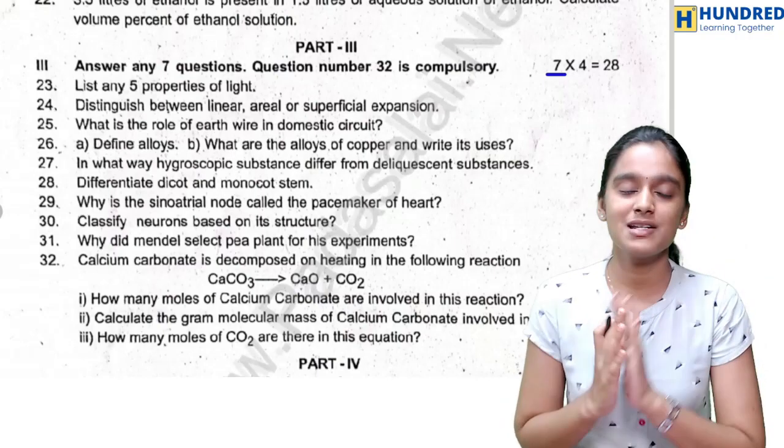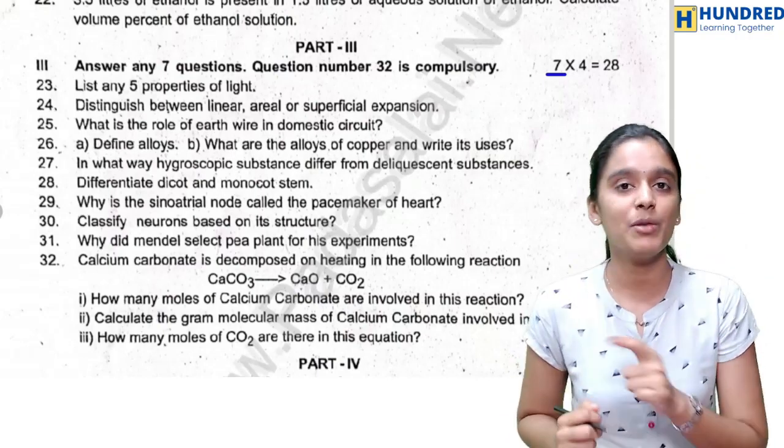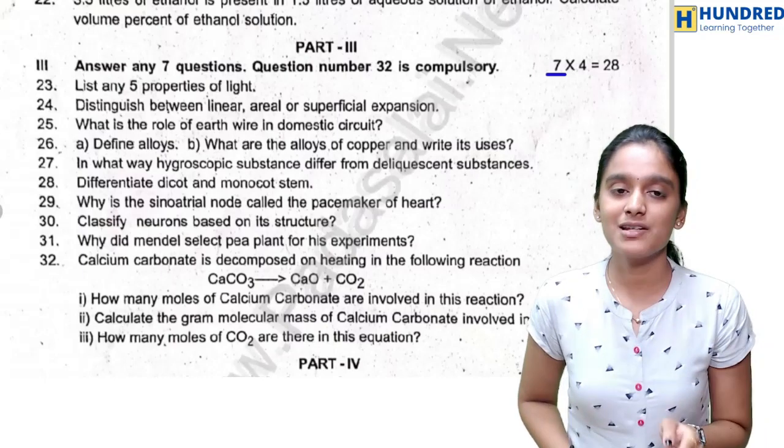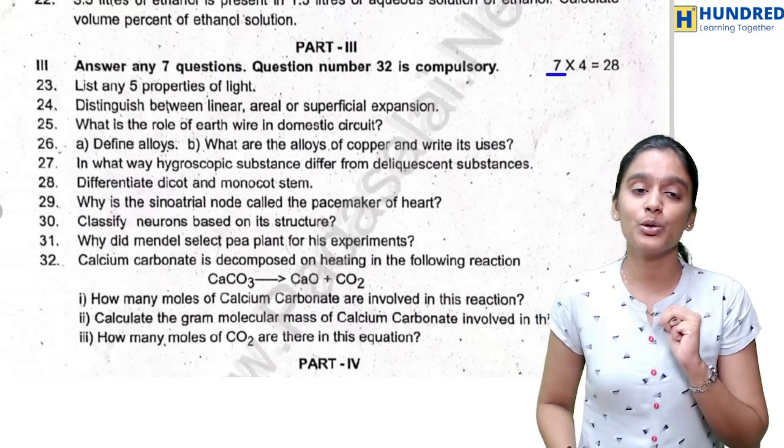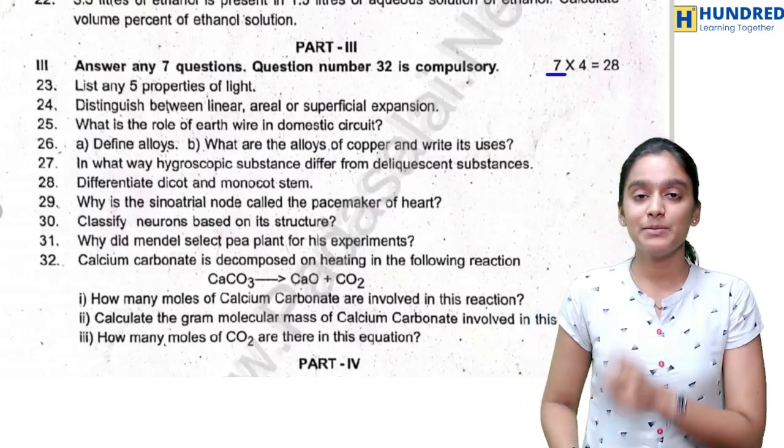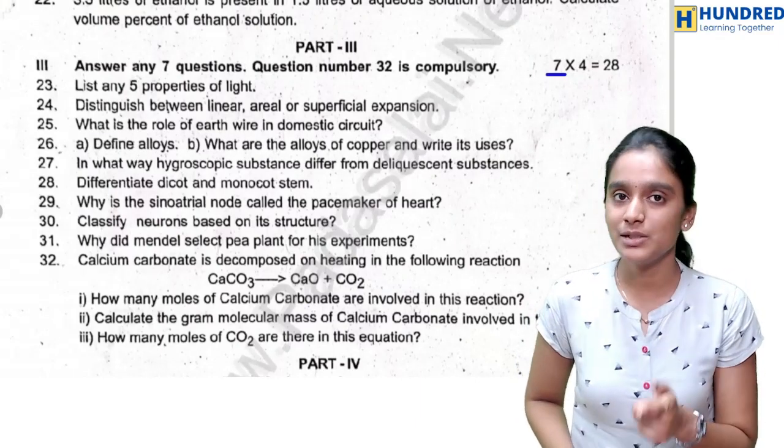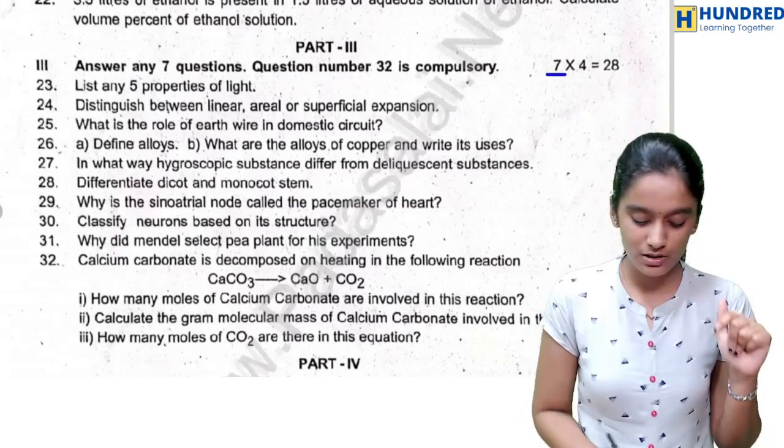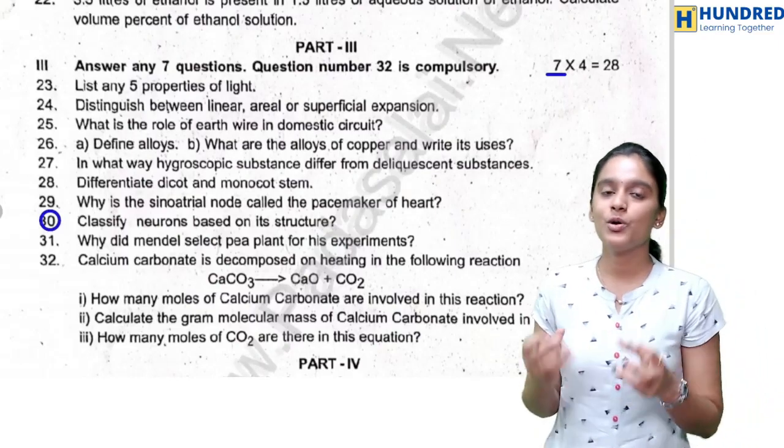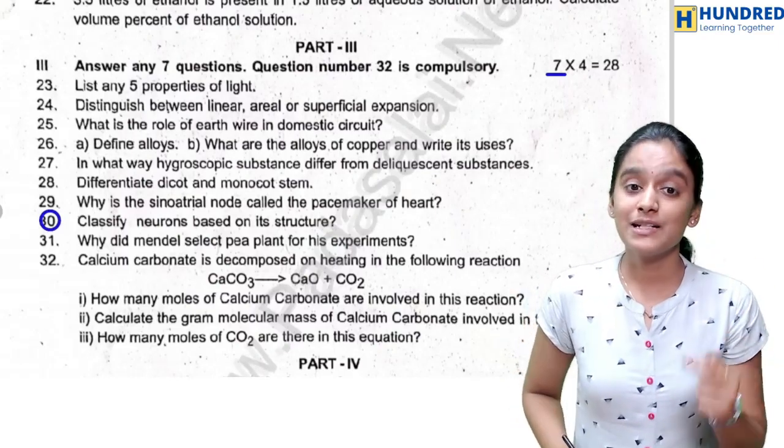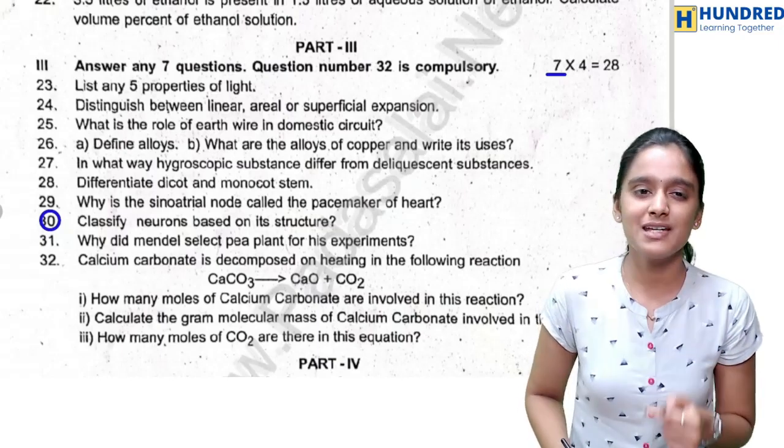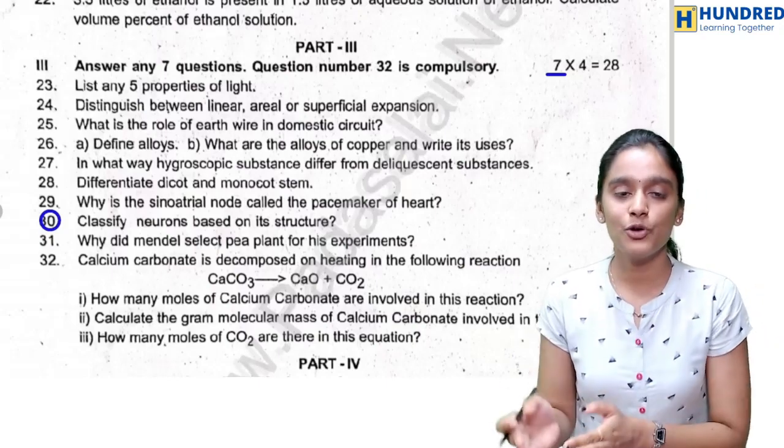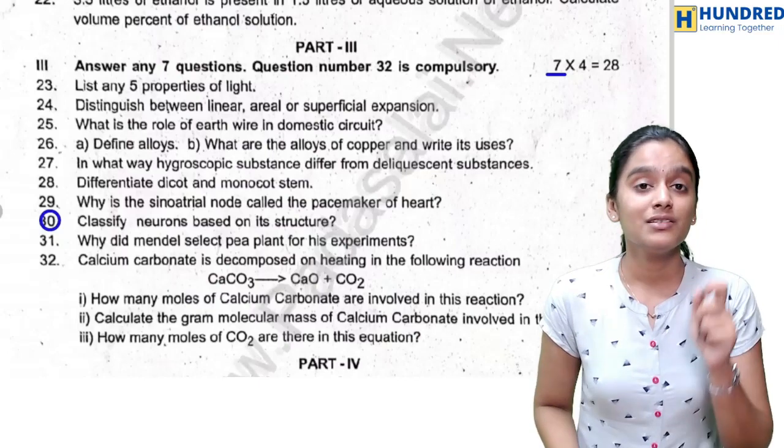Top 40 questions are all about these, so if you study these questions you can do well. Differentiate dicot and monocot stem, root, aerobic and anaerobic respiration. This is the third question from your 12th chapter: why is sinoatrial node called the pacemaker of heart? This is an important question. Classify neurons based on the structure. This is a little unexpected question but still you can answer: unipolar, bipolar, multipolar. And why did Mendel select pea plant for his experiment? This is also very easy actually and the reasons you can quote.